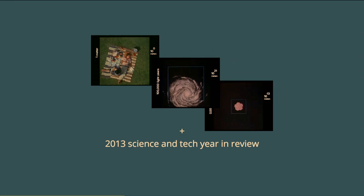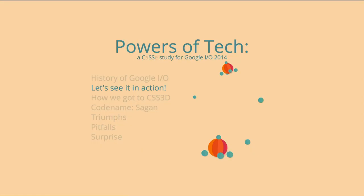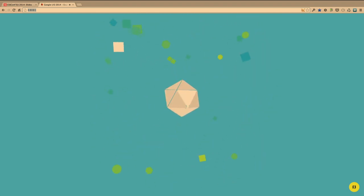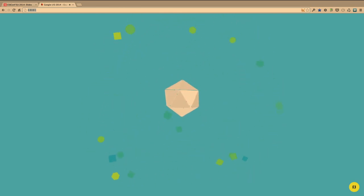We wanted to take this idea of a journey from the micro to the macro. And since Google I/O is annual, we wanted to include a year in review of tech, science, and things that Google is doing and acquisitions they've made. A lot of you guys have probably already seen this — this is about a 45-second version of it. When you actually go check it out, you click and move and can solve puzzles to go through it.